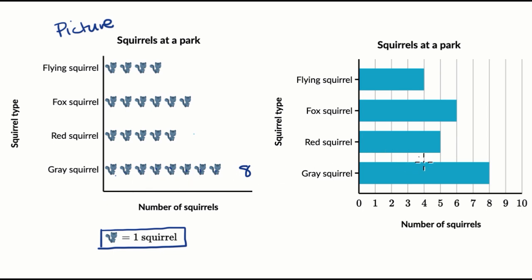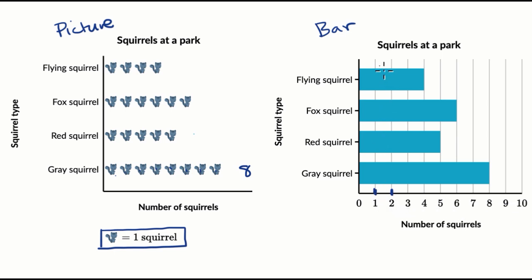Now we could have also used this graph on the right, and this is called a bar graph, because you have these bars to show how much of each type of squirrel you have. We can confirm that the gray squirrels right over here — this is also showing that you have eight. With a bar graph, this one has it nicely numbered, where we see that each line increases by one: one, two, three, four, five, six, seven, eight, nine. Sometimes it's not labeled as neatly, and sometimes each of these vertical lines might represent two, or three, or four. So it's always good to make sure, but this one's pretty straightforward. We can see there are eight gray squirrels.